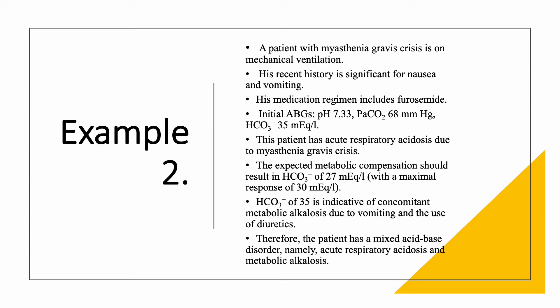Example 2: A patient with myasthenia gravis crisis on mechanical ventilation, with history of nausea, vomiting, and furosemide use. ABG: pH 7.33 (acidemia), PaCO2 68 (acute respiratory acidosis), bicarbonate 35. Both went up, but the expected metabolic compensation yields a bicarbonate of 27 (maximum 30). The actual bicarbonate of 35 is much higher than expected — due to metabolic alkalosis from vomiting and diuretic use. This is a mixed disorder: acute respiratory acidosis and metabolic alkalosis.